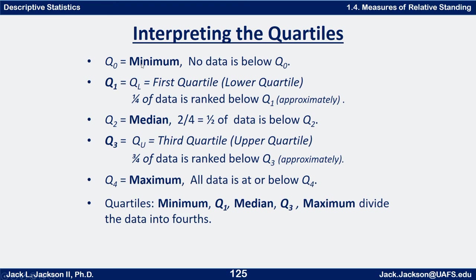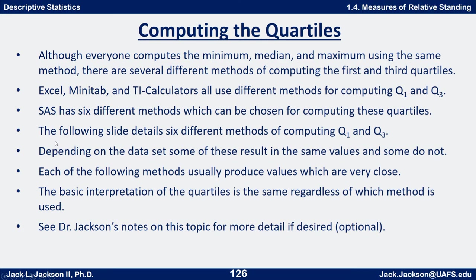We've already talked about how to find the minimum, maximum, and median, so now all we need is to figure out how to find Q one and Q three. There's a wrinkle here: everyone computes the minimum, maximum, and median the same way, but there are different methods for computing Q one and Q three. For example, Excel, Minitab, and the TI calculators all use different methods for computing Q one and Q three.